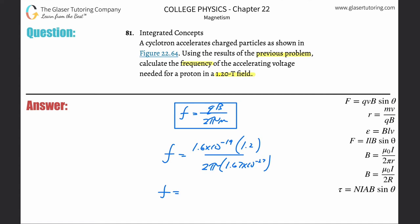So 2 pi times 1.67 times 10 to the minus 27th. Hopefully I didn't make a mistake here while I'm calculating, but the frequency here is going to be about 1.83 times 10 to the seventh, and that's in hertz.